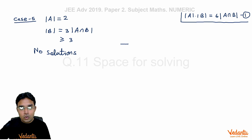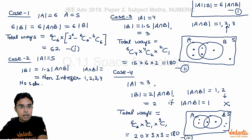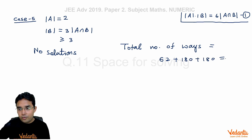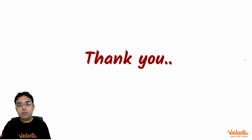The grand total number of ordered pairs (A, B) is the sum of all valid cases: 62 + 180 + 180 = 422. So 422 is the final answer. I hope you liked this solution — thank you so much, stay tuned for more solutions and questions, bye.